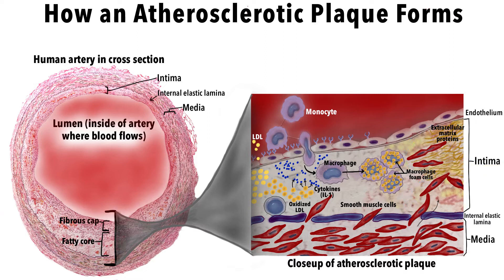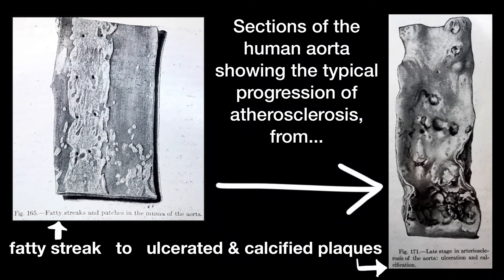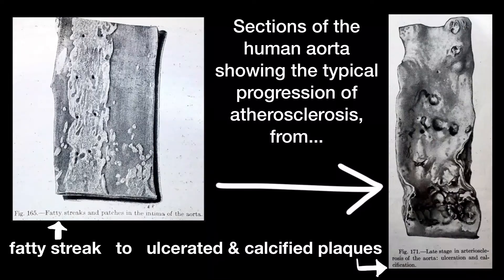At the same time, the intimal layer of the arterial wall is transformed by smooth muscle and collagen deposition. If you were to look at the inside of an artery to follow this process, first you would see flat yellow fatty streaks that are one centimeter or longer along the arterial wall. These fatty streaks are actually made up of those fat-filled macrophages. As more and more LDL is deposited in the intimal layer of the artery, smooth muscle cells and collagen follow, eventually forming atherosclerotic plaque in the lining of the artery.